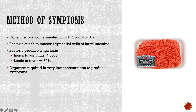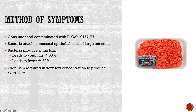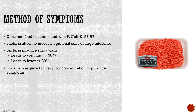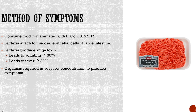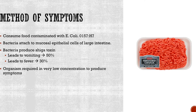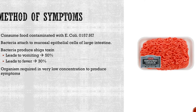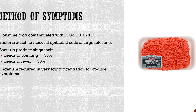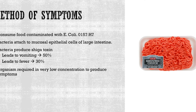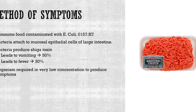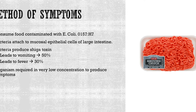After the consumption of food contaminated with E. coli O157H7, the bacteria travel through the digestive system where they latch onto the mucosal epithelial cells of the large intestine. The bacteria then form a pedestal, which leads to destruction of microvilli in the large intestine. Once a pedestal has been formed, bacteria multiply, leading to the production of more shiga toxin, which induces vomiting in 50% of cases and fever in 30% of cases. The organism is required in very low concentrations to produce symptoms, as fewer than 100 cells may be enough to cause an infection.